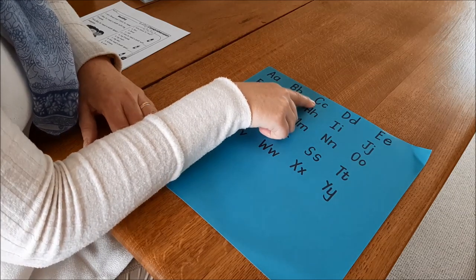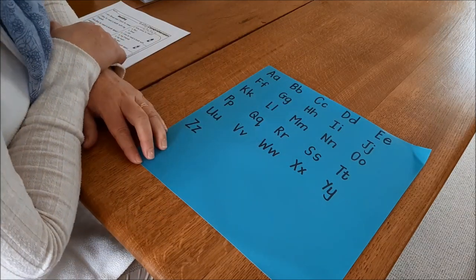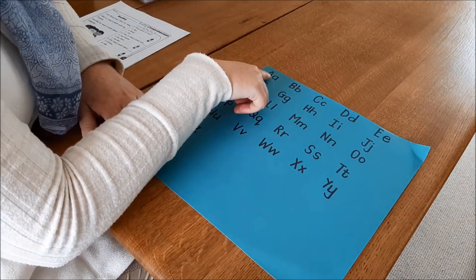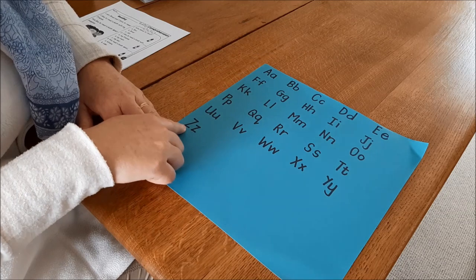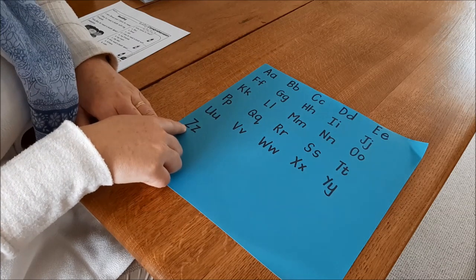Finger space, capital and lowercase the whole way. Practice from right from A all the way to Z at the end of the alphabet.